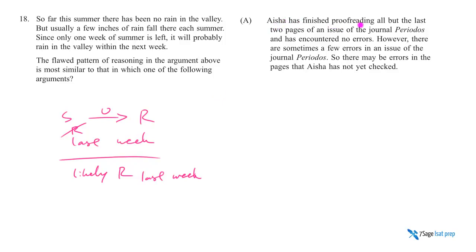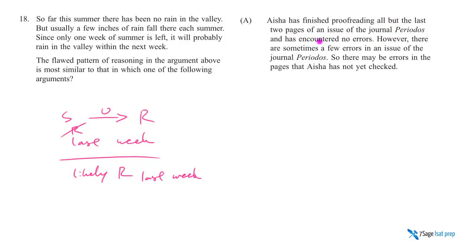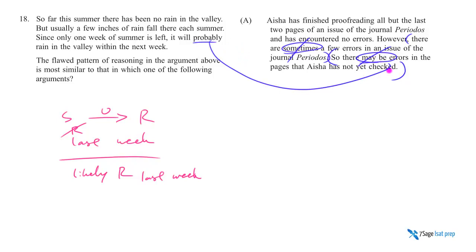Answer A says Aisha has finished proofreading all but the last two pages of an issue — the last two pages correspond to the last week, all previous pages to all previous weeks of summer. She has encountered no errors, like no rain so far. However, 'there are sometimes a few errors in the issue' — that's not a match. This needed to say 'usually there are a few errors in every issue,' just like how we say 'usually it rains every summer.' Also the conclusion should say 'likely' not 'sometimes,' so A is not good.